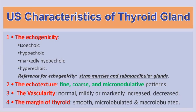Whenever we are doing an ultrasound of the thyroid gland, certain characteristics should be considered. First, echogenicity — which may be isoechoic, hypoechoic, markedly hypoechoic, or sometimes hyperechoic. For the thyroid gland, the reference point for echogenicity is the strap muscles or it should be compared with the submandibular glands. Second, ecotexture — whether it is fine, coarse, or if micronodularity is present. If color Doppler is available, vascularity is important, and it is divided into normal, mildly increased, markedly increased, or sometimes decreased.